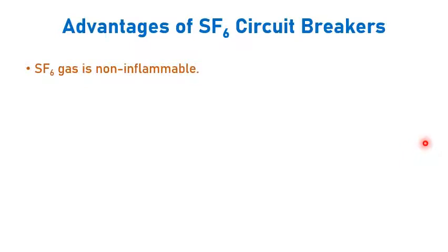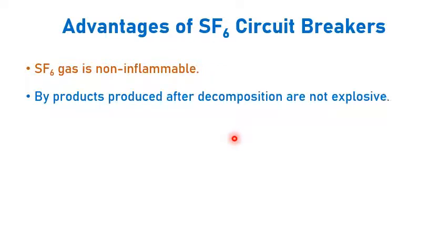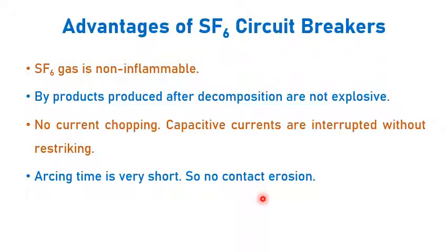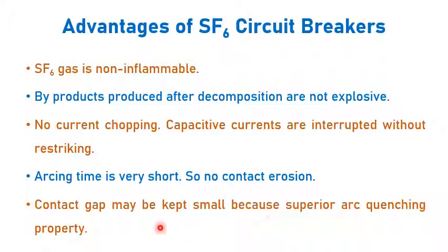Advantages of SF6 circuit breakers: SF6 gas is non-inflammable and the byproducts produced after decomposition are not explosive. No current chopping is possible and capacitive currents are interrupted without re-striking. The arcing time is very short because SF6 gas quenches the arc at a faster rate, keeping the contacts very safe. Also, you can keep the contact gap very small — even a small gap is enough to quench the arc.